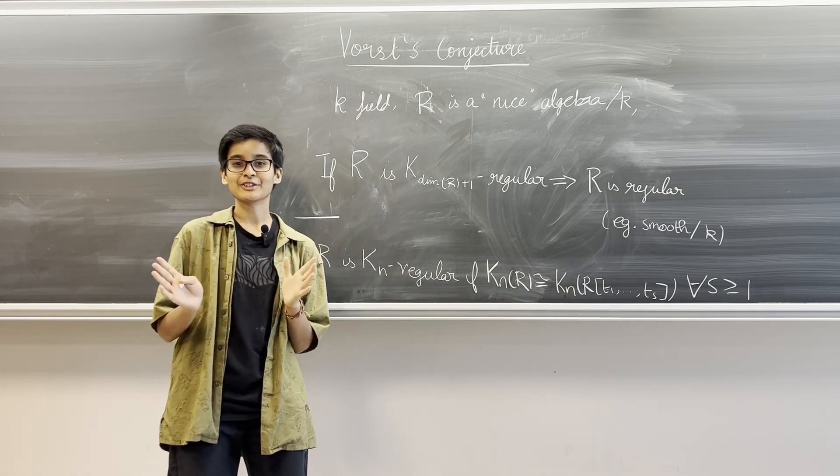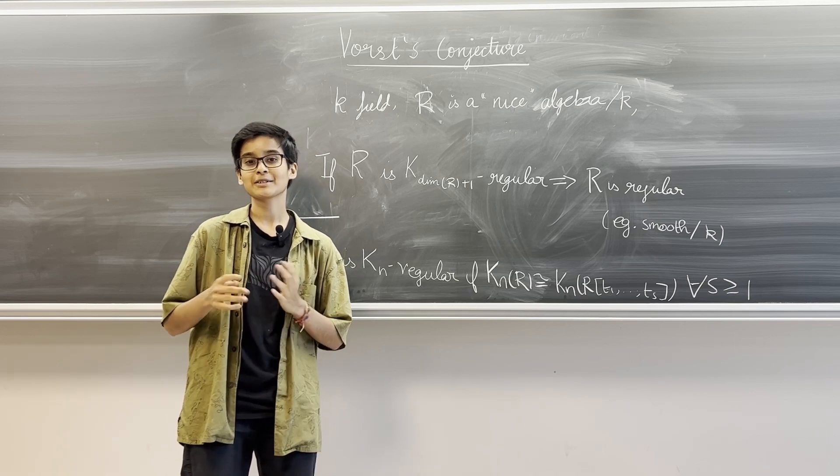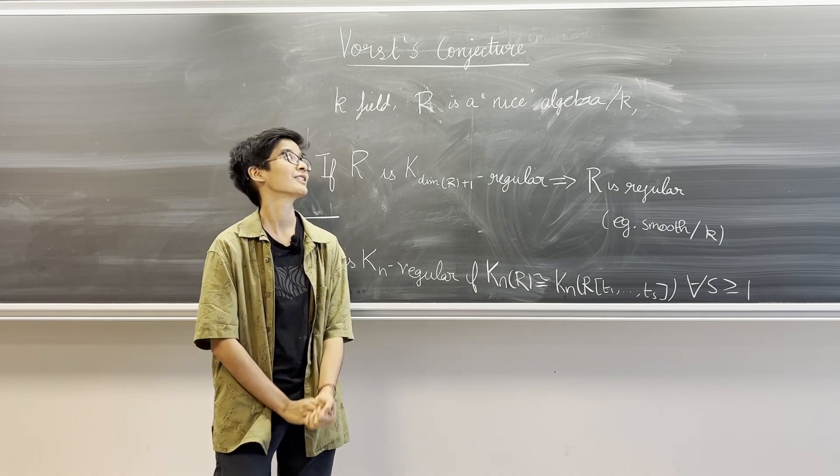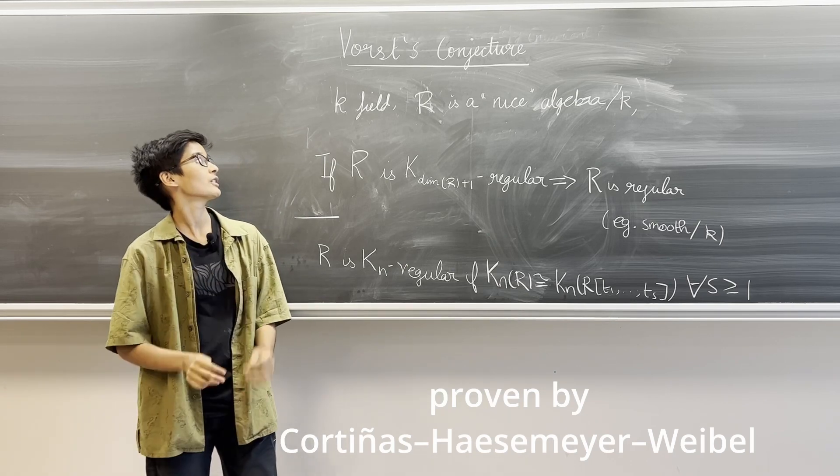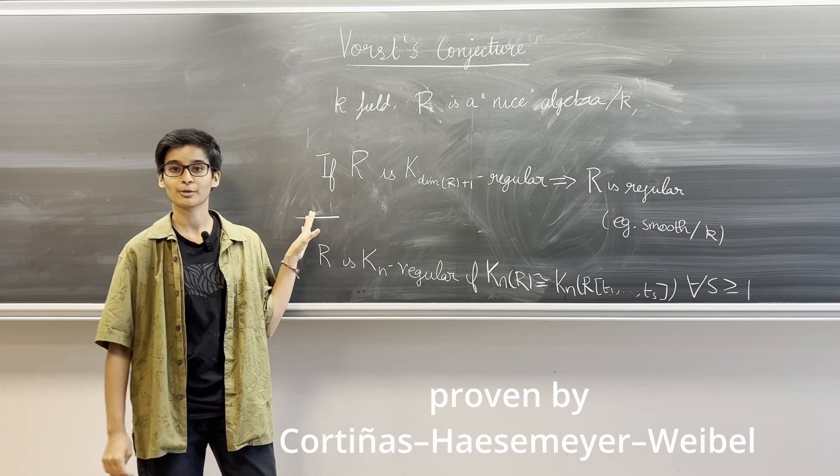As I've said before, this conjecture has not been proven in its full generality as of yet, but there are certain cases which have been proven in the past. For example, in 2007 it was shown that if K is a field of characteristic 0 then this conjecture holds.